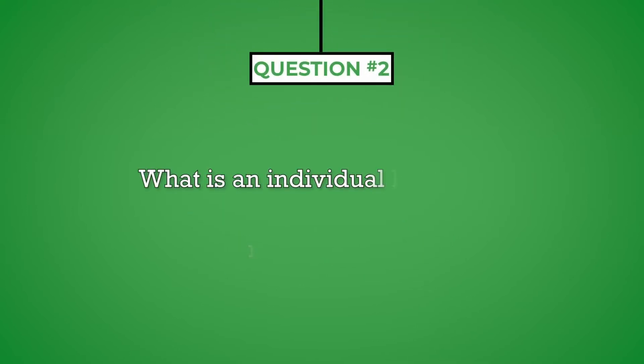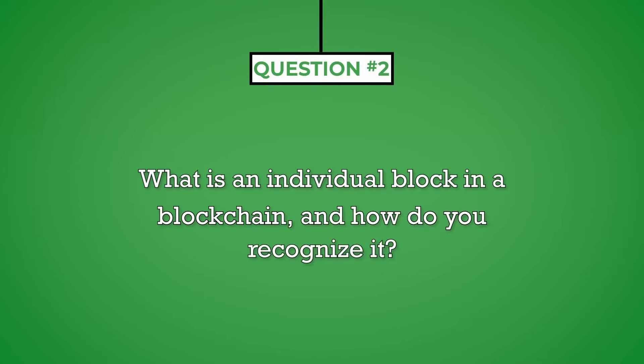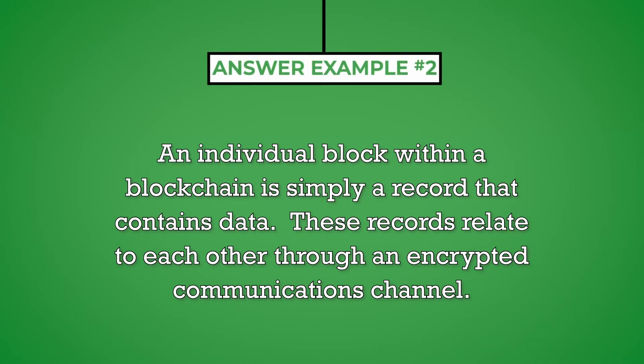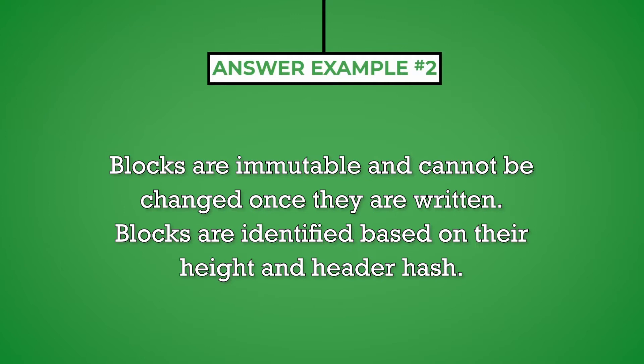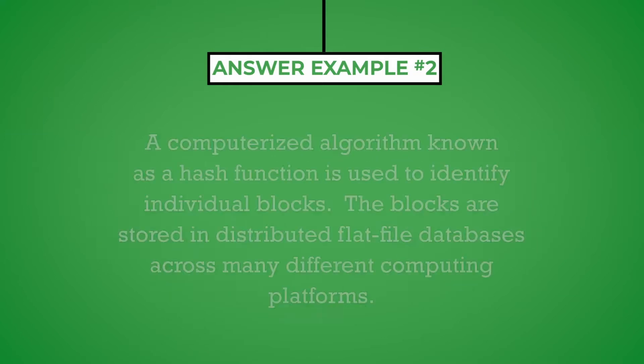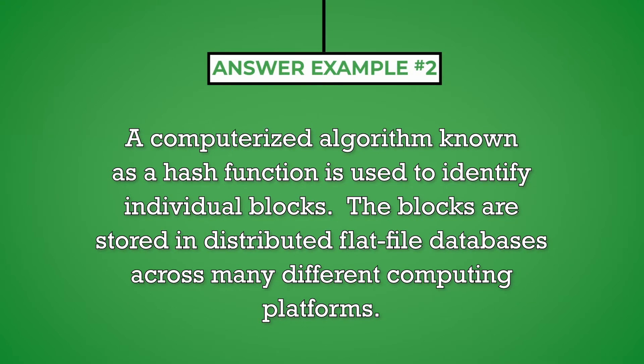Question number two: what is an individual block in a blockchain and how do you recognize it? You can recognize this question as being technical because it asks about a specific term or feature of the blockchain. Keep in mind that your answers to technical questions should be brief and to the point, allowing the interviewer to ask follow-up questions if they need additional information. An individual block within a blockchain is simply a record that contains data. These records relate to each other through an encrypted communications channel. Blocks are immutable and cannot be changed once they are written. Blocks are identified based on their height and header hash. A computerized algorithm known as a hash function is used to identify individual blocks. The blocks are stored in distributed flat file databases across many different computing platforms.